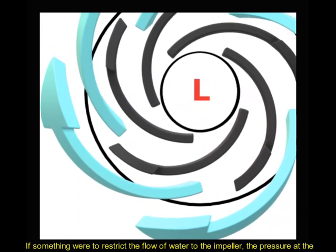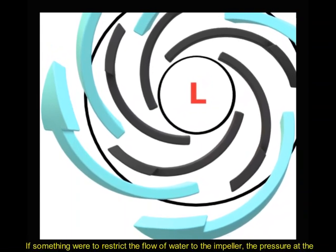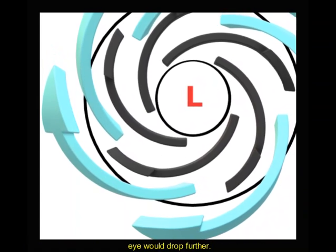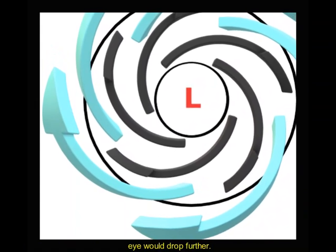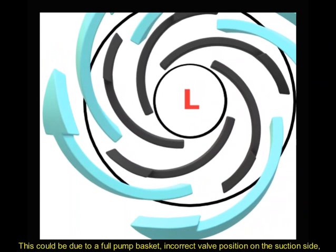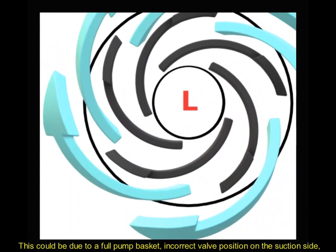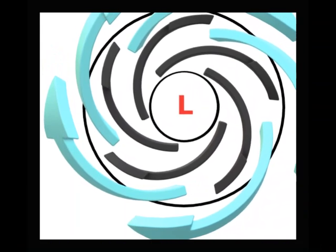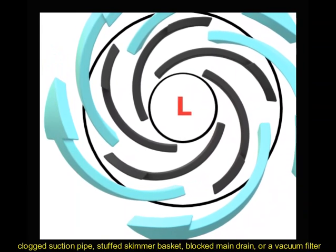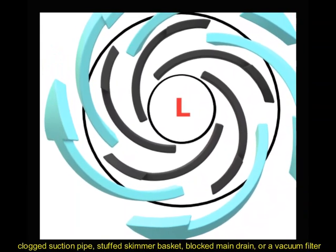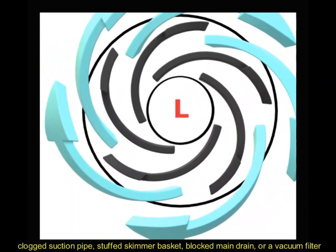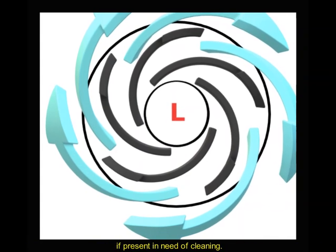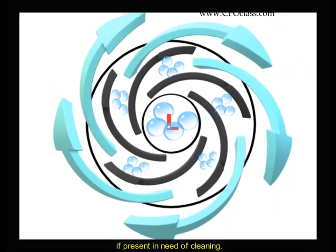If something were to restrict the flow of water to the impeller, the pressure at the eye would drop further. This could be due to a full pump basket, incorrect valve position on the suction side, clogged suction pipe, stuffed skimmer basket, blocked main drain, or a vacuum filter, if present, in need of cleaning.